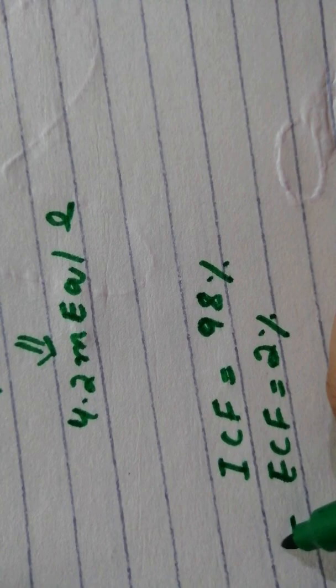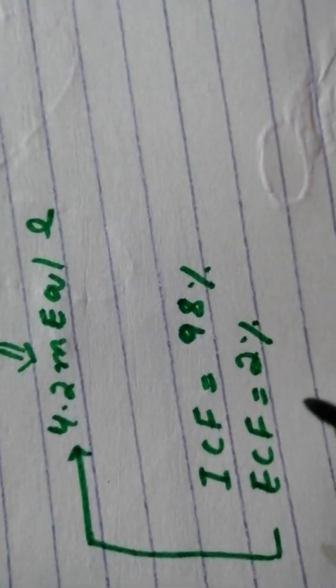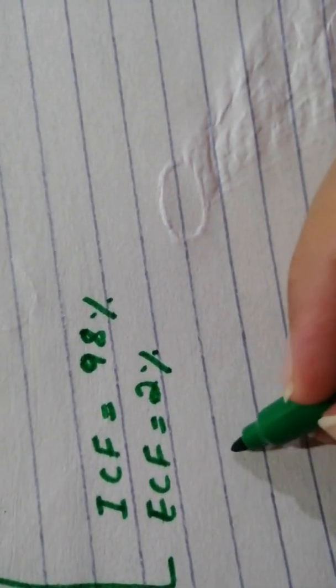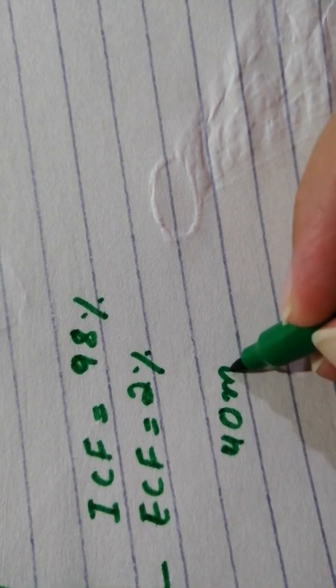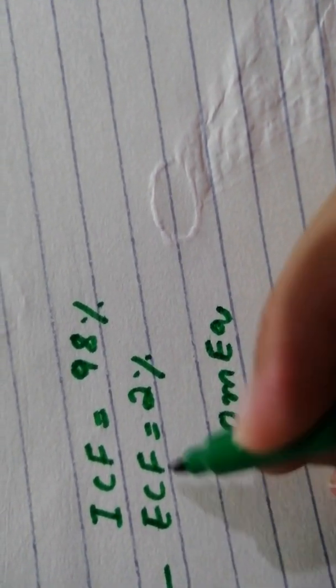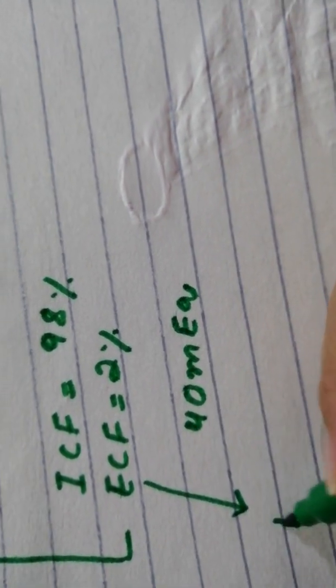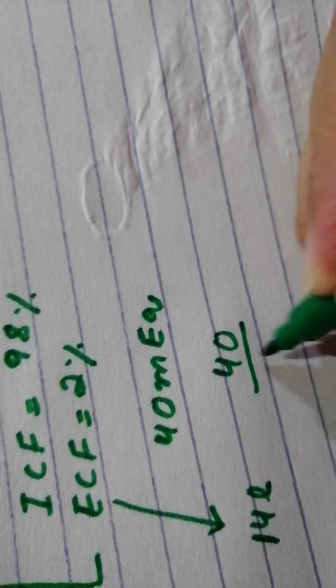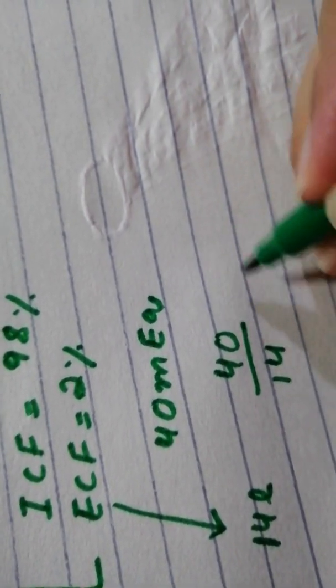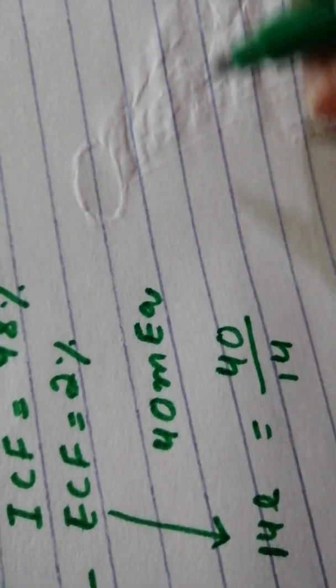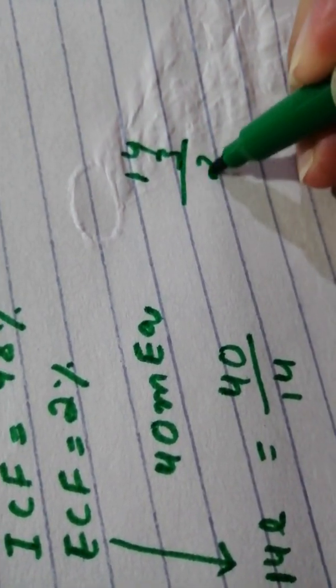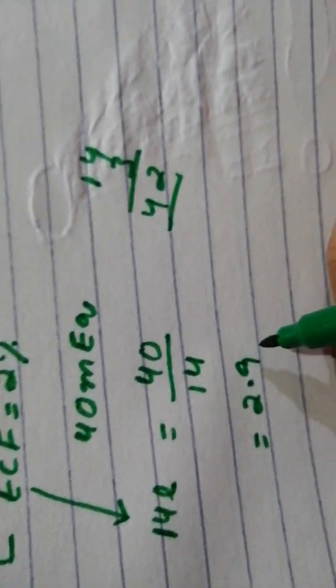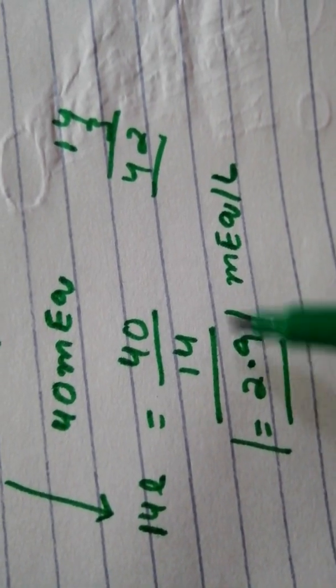This 2% corresponds to this concentration, giving a normal value. Vegetables, fruits, and other foods contain about 40 milliequivalents of potassium. Your ECF volume is about 14 liters, so 40 divided by 14 is around 2.9.